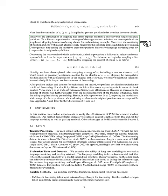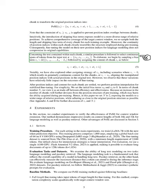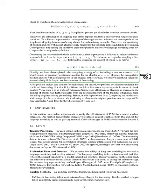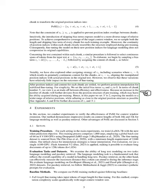To ensure comprehensive coverage of the target context window, we resample both the length and skipping bias term of every chunk for each training example. We also select continuous spans of tokens from the input text. We've explored different strategies for assigning bias terms, but found these variations have little impact on the outcomes of fine-tuning. Once position indices and content are settled, we perform position interpolation for stabilized fine-tuning. We set the number of chunks to two, as a trade-off between efficiency and effectiveness.